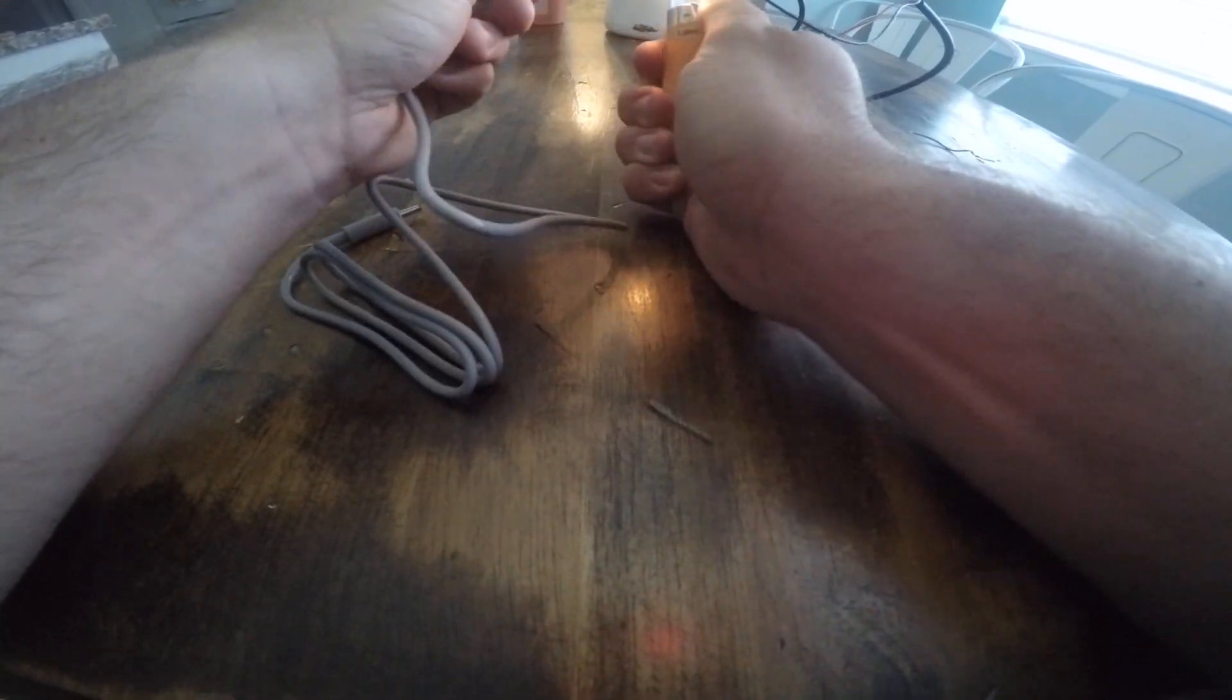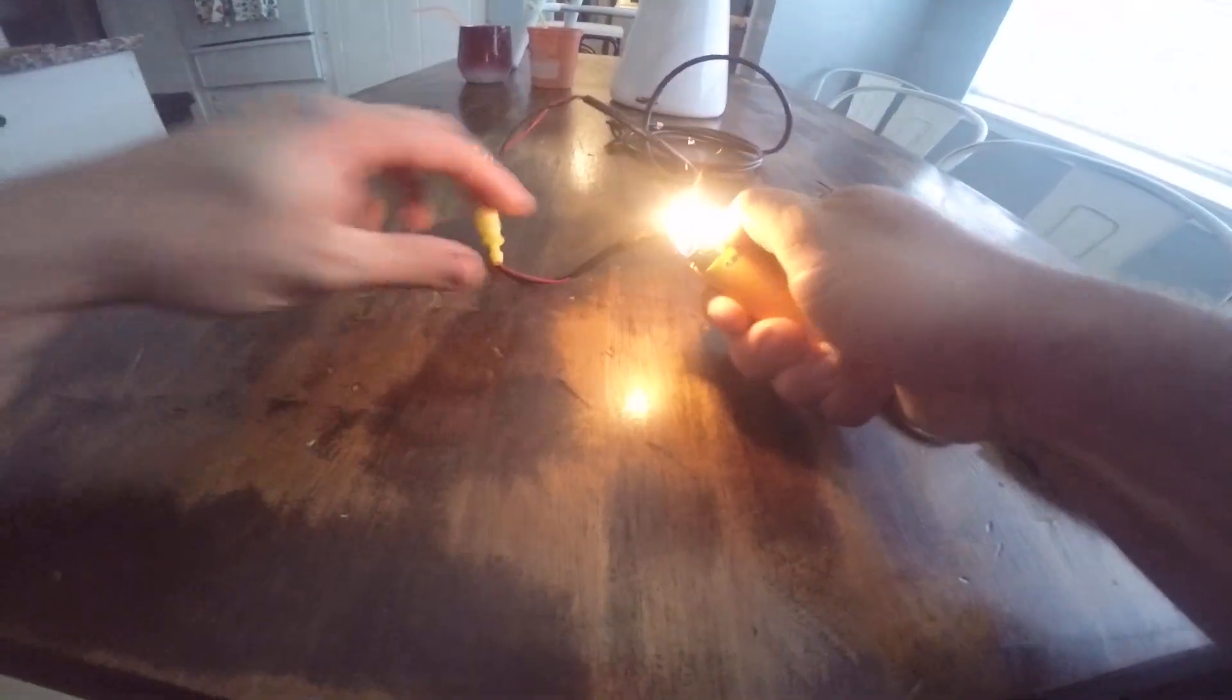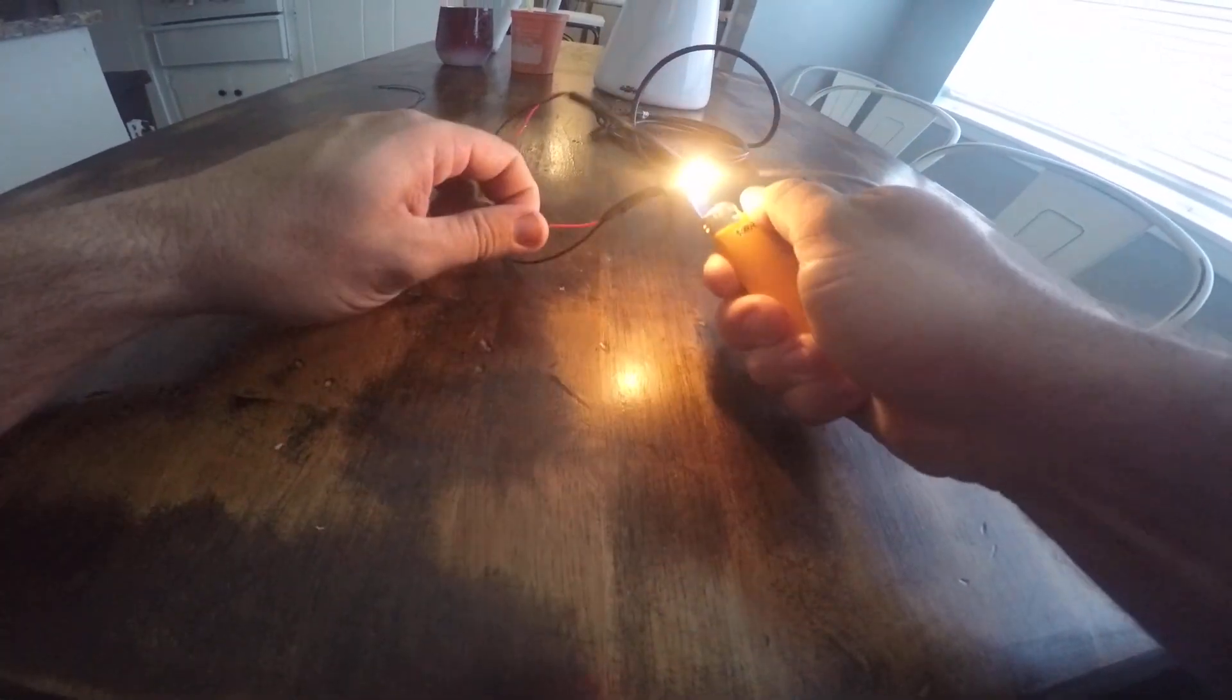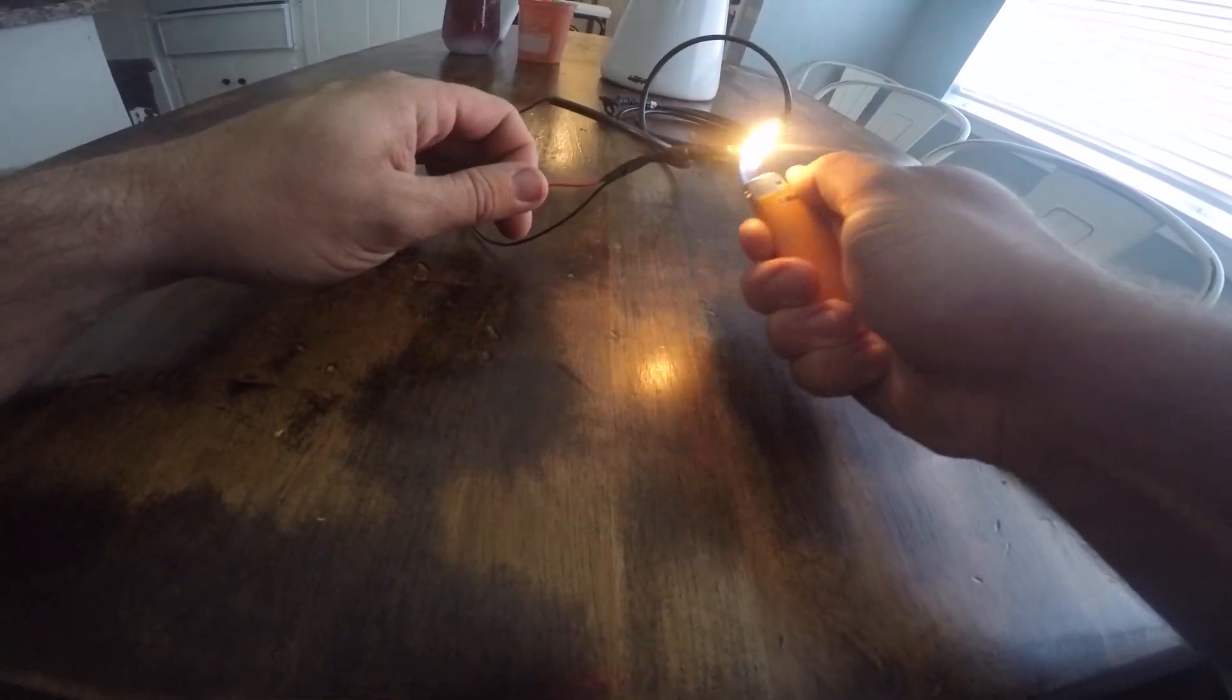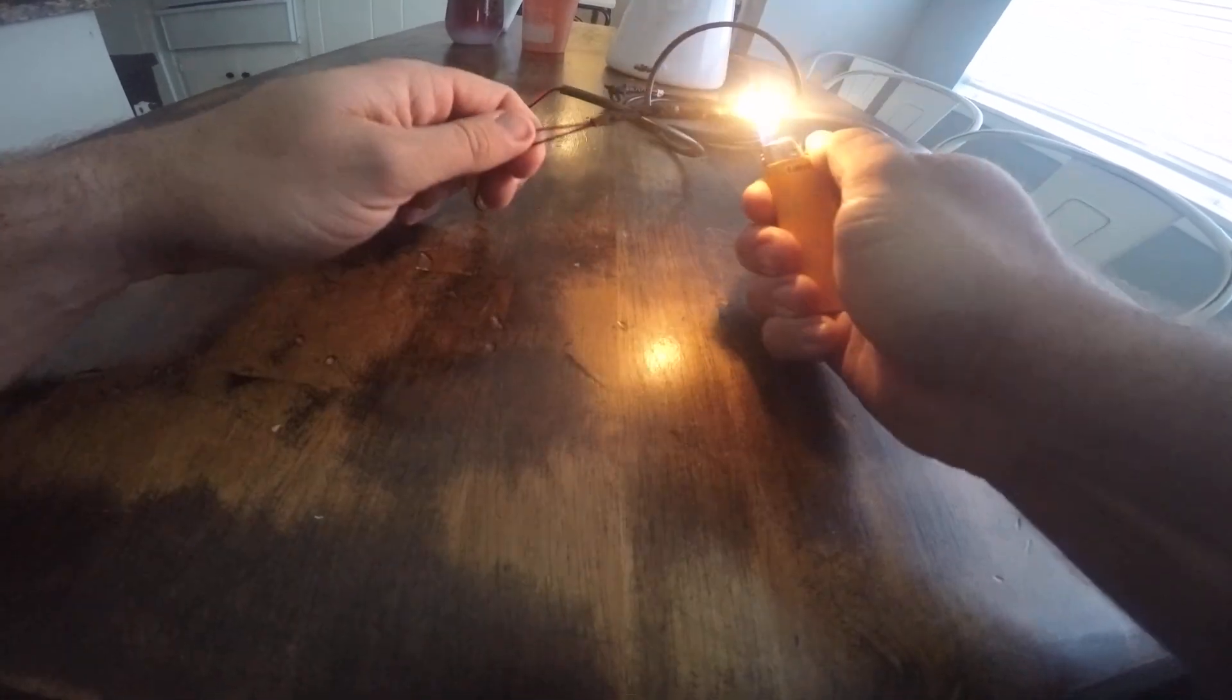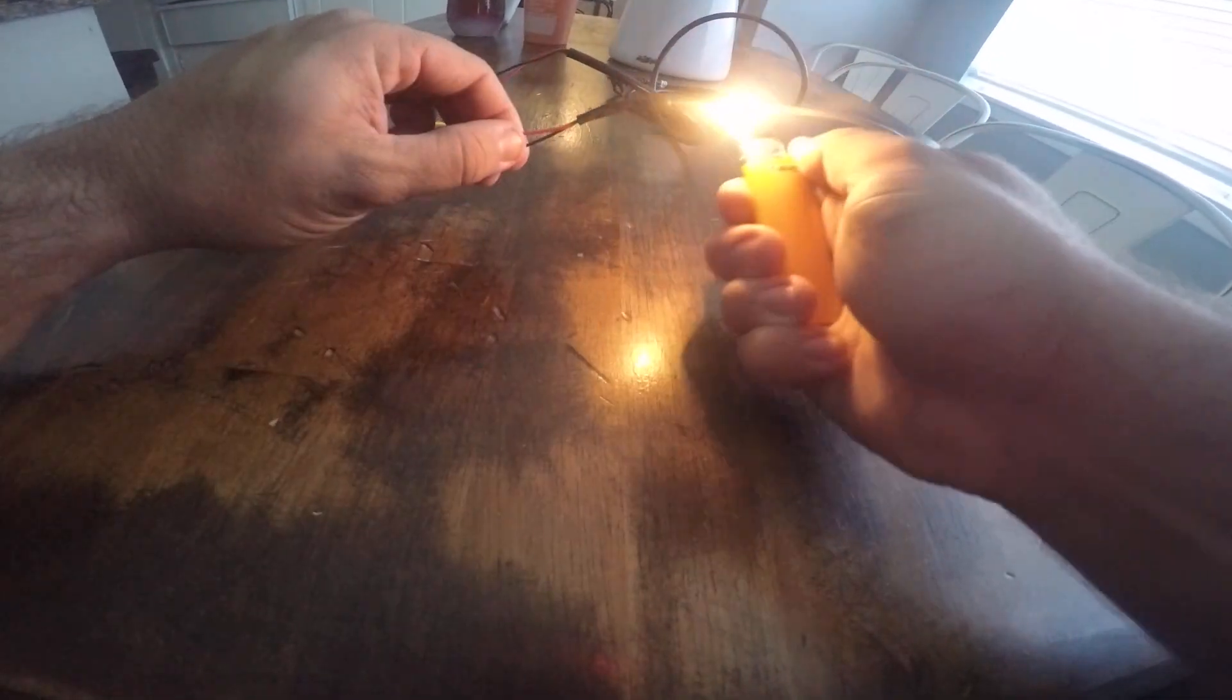I'm going to do one side so I don't get my hands burned, and then I'm going to switch to the other side. That's shrinking around the tube and the wires, just locking that in there a little bit better so that it doesn't pull apart easily.